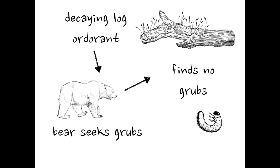Now let's look at some examples where you identify the sign vehicle, response, and object yourself. Here we have a decaying log giving off an odor, and a bear who eats grubs — grubs tend to live in decaying logs. You'll want to identify what the sign vehicle is, what the response is, and what the objective is. In this example, it turns out the bear doesn't actually find any grubs.